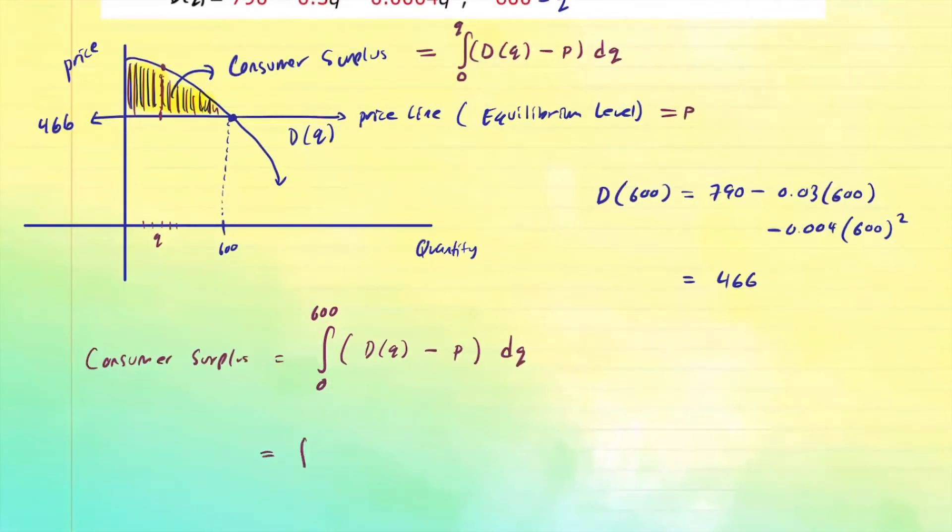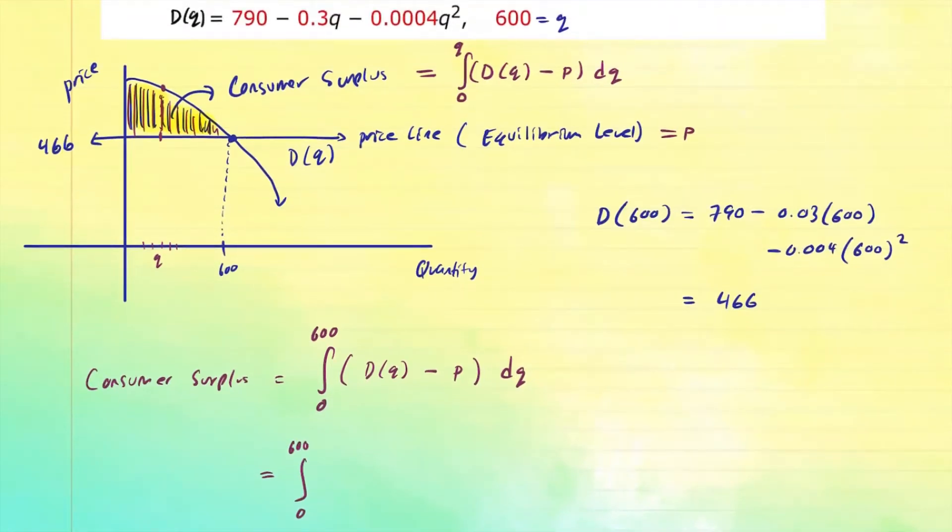So we're integrating the integral from zero to 600 of the demand function. So I simply take that function 790 minus 0.3q minus 0.0004q squared, and I subtract away the price line, which is 466 dq. That's the setup for consumer surplus.